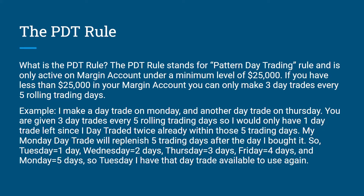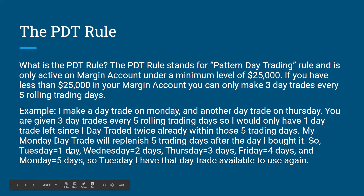You are given three day trades every five rolling trading days, so I would only have one day trade left since I already day traded twice within those five trading days — Monday and Thursday. My Monday trade will replenish five trading days after the day I bought it: Tuesday is one day after, Wednesday two, Thursday three, Friday four, and back to Monday — that's five days. So on that Tuesday I will have that trade available to use again.